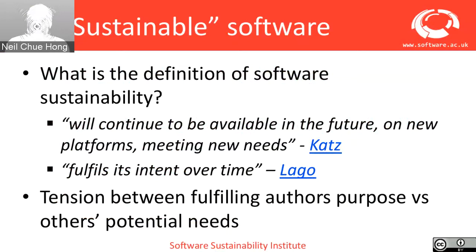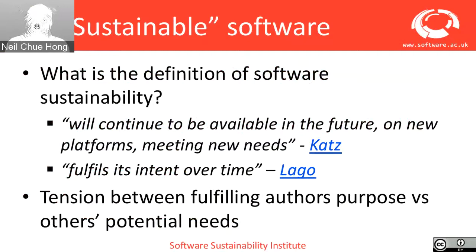Patricia Leggo has a similar but slightly different definition, which is around software fulfilling its intent over time — it basically does what it should do. The real challenge with research software is this tension between fulfilling the author's purpose and fulfilling others' potential needs. You may write a piece of software for yourself, share it with collaborators, they share it further, and quickly you're not just developing it for your own needs but for others' needs. Sustainability becomes harder because you may not have enough resources or it's taking the project in a different direction.